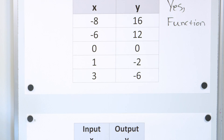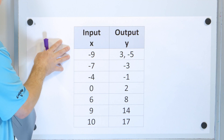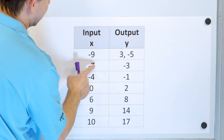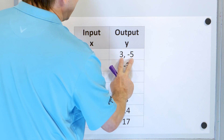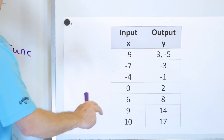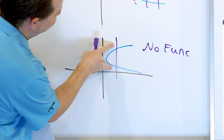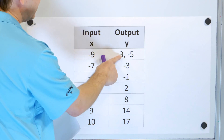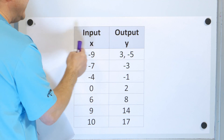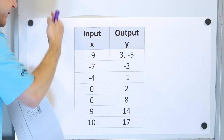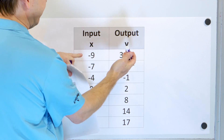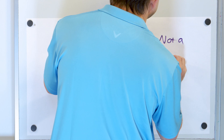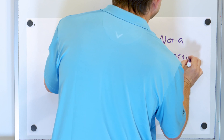Now let's compare that to problem number two. For all of these values, one output, one output — but at negative nine, there are actually two outputs. That's the similar situation to before: we had an input and two output values, so it failed the vertical line test. This is going to fail the vertical line test, because if you were to graph it, at negative nine for x you would have two values for y. So without graphing anything, just by seeing this, you know it's not a function.